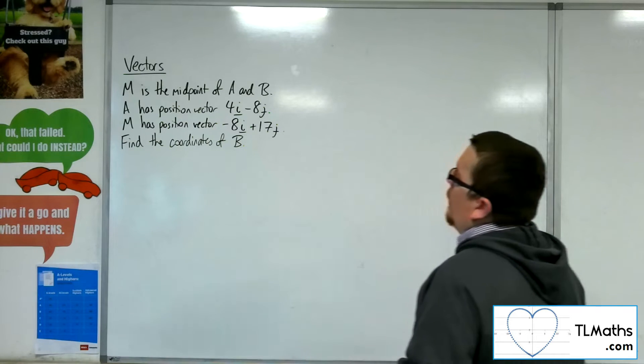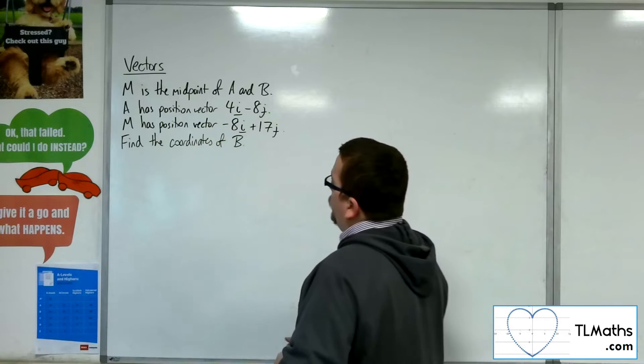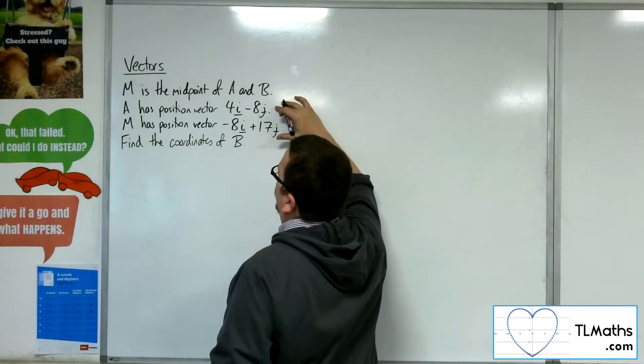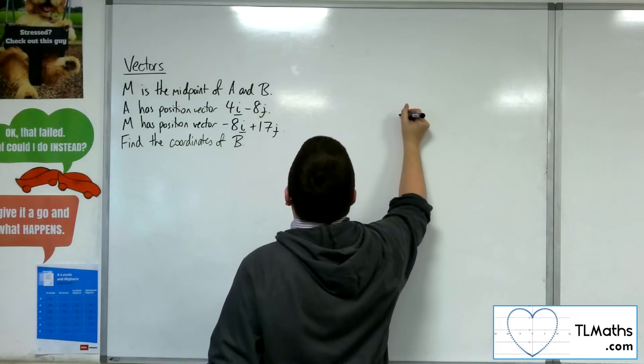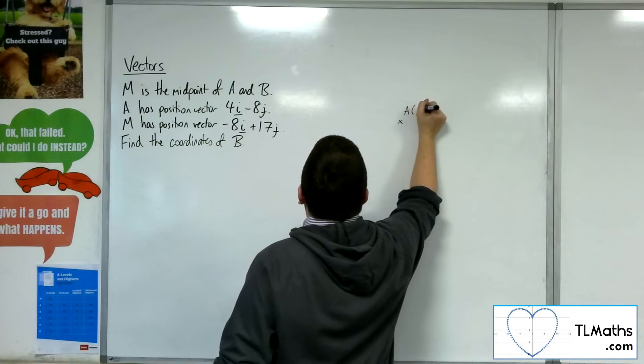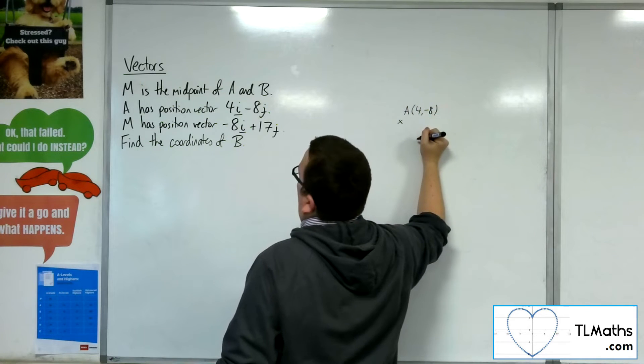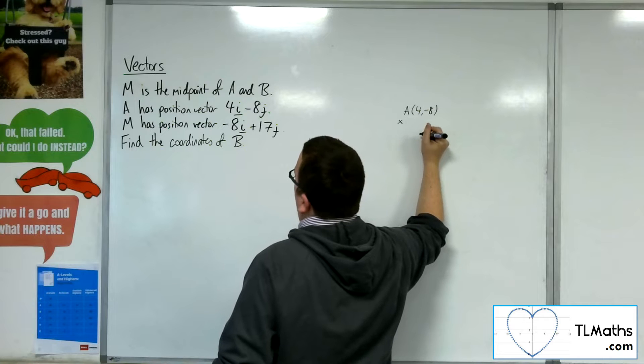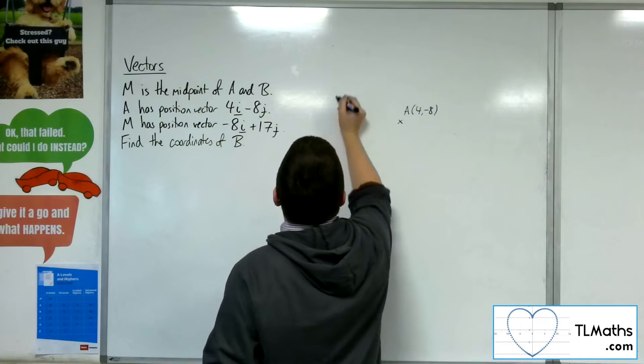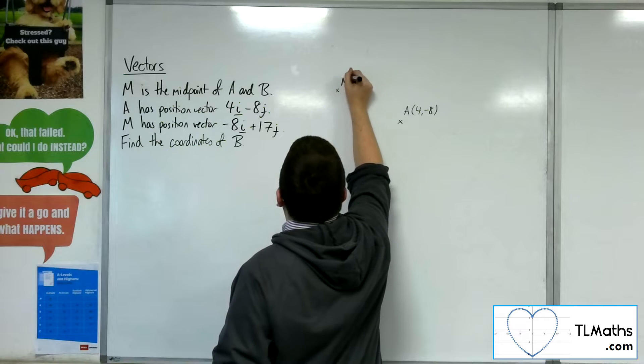So if we want to really think about what's going on here, A will have coordinates 4, minus 8, so A could be over here. And M has position vector minus 8, 17, so minus 8, 17, somewhere up here. So here's M.